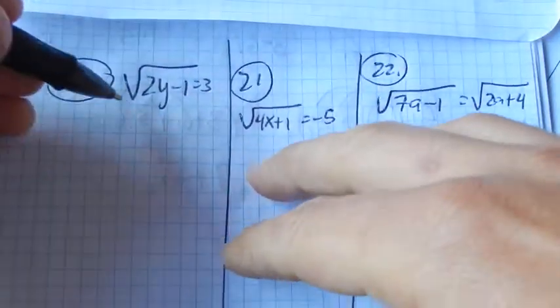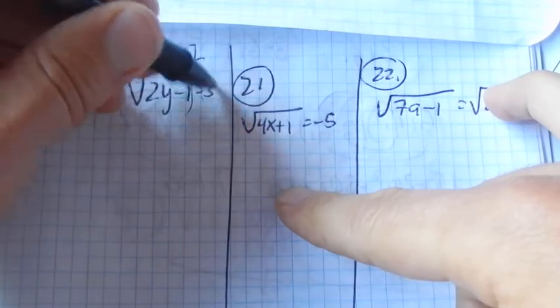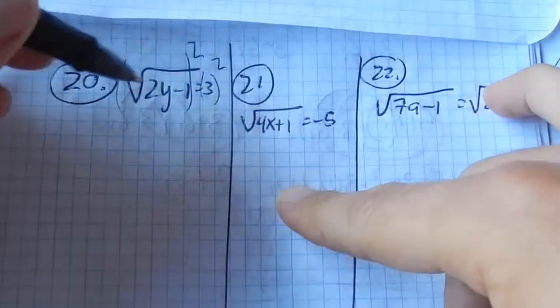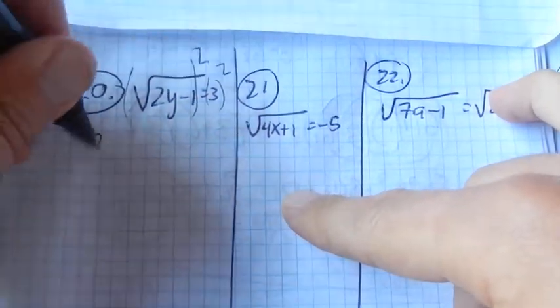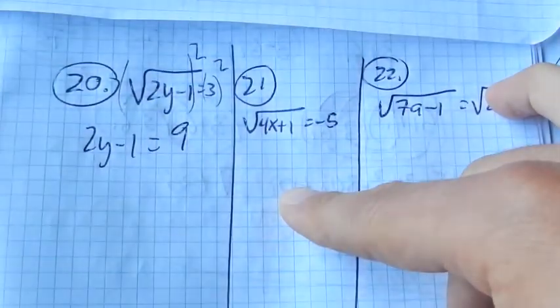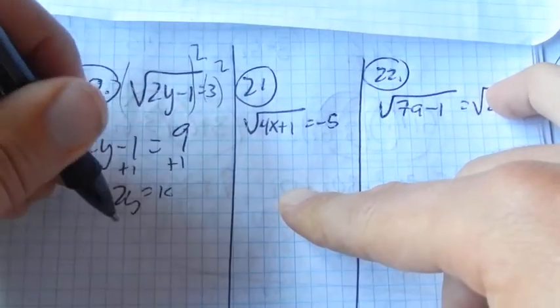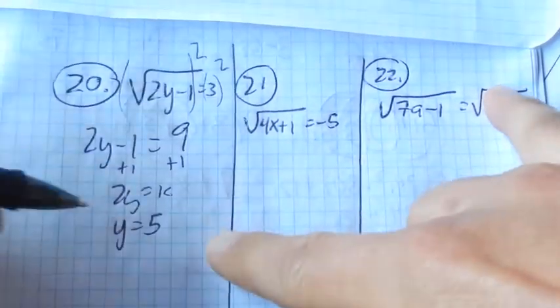So what I'm going to do first to get rid of that radical on this one is square both sides. If I square both sides, the square root squared is just the thing that was in there. 3 squared is 9. Add 1 to both sides. 2y equals 10, divided by 2, y equals 5.